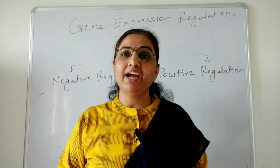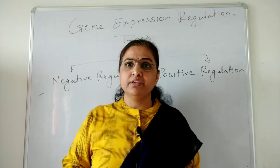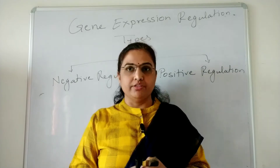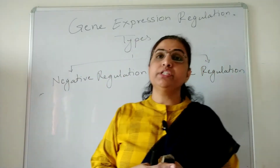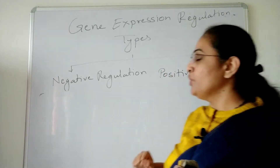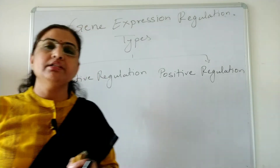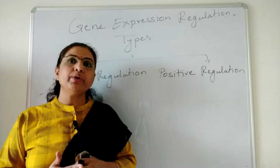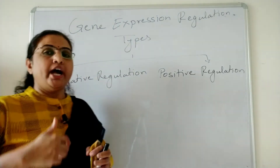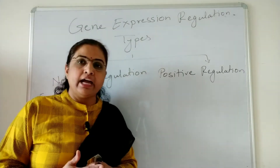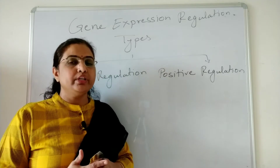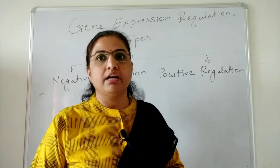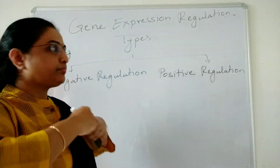Welcome back to the fascinating world of genes with Rohini. From the last video we learned about the types of regulations, and this video is also an extension of that. There are two types of gene expression regulation: negative regulation, where a repressor binds to the operator and prevents gene expression, and positive regulation, where an activator binds near the promoter allowing RNA polymerases to load and start transcription.